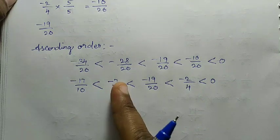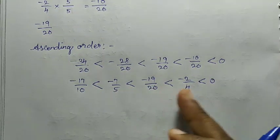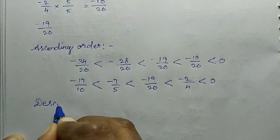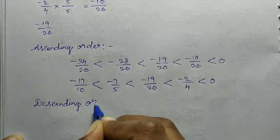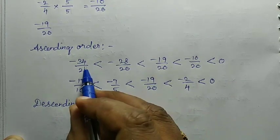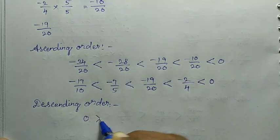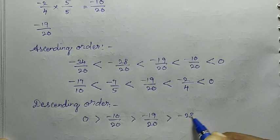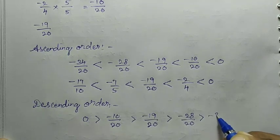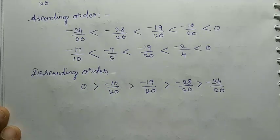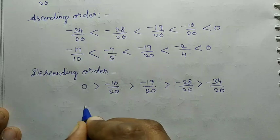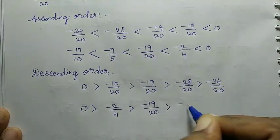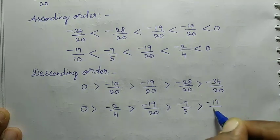So the values with denominator 20 in ascending order are: minus 34/20 < minus 28/20 < minus 19/20 < minus 10/20 < 0. Writing with the original fractions, ascending order: minus 17/10 < minus 7/5 < minus 19/20 < minus 2/4 < 0. For descending order, we reverse: 0 > minus 2/4 > minus 19/20 > minus 7/5 > minus 17/10.